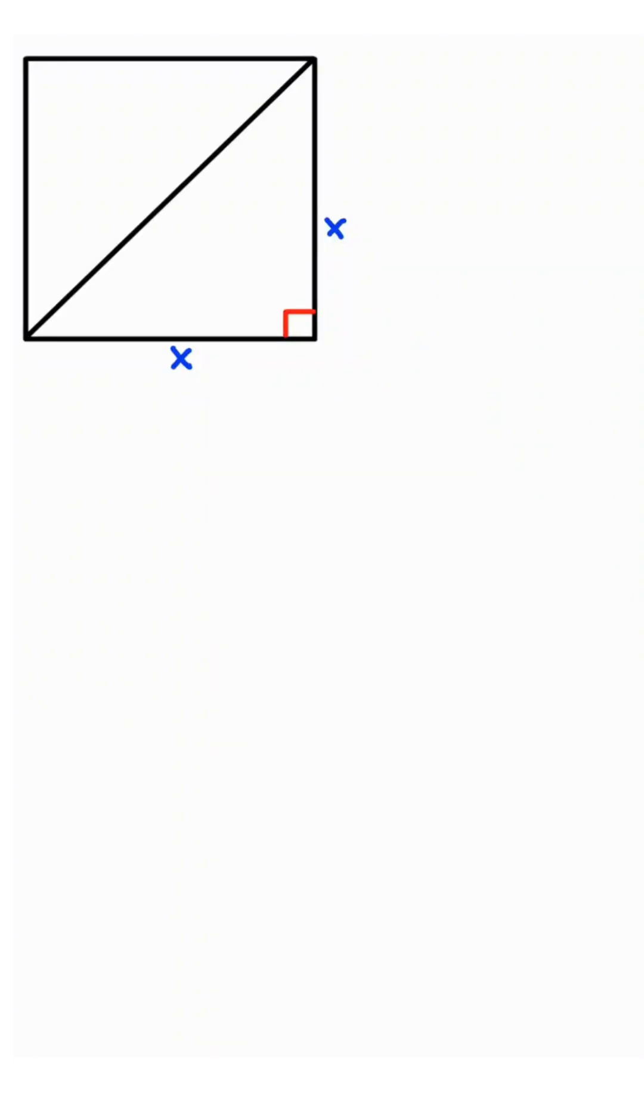Take a square, draw the diagonals. This will create a right triangle and cut these angles in half, meaning each of these angles are 45 degrees.